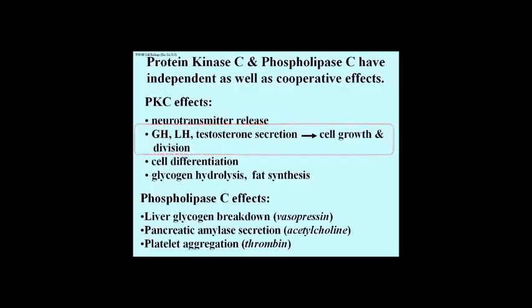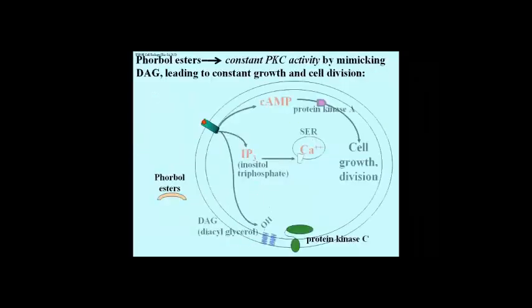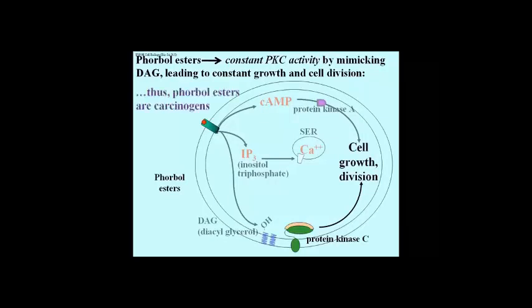Some chemicals mimic the mitogenic functions of protein kinase C. One class of carcinogenic chemicals is the phorbol esters, normally found in some plants. As shown here, they can get into cells and bind to protein kinase C, activating it and causing the cell to respond as if it were responding to hormones that activate PKC. Because human cells have no way to get rid of the phorbol esters, the activated PKC has persistent mitogenic effects, leading to cancer and tumor formation.